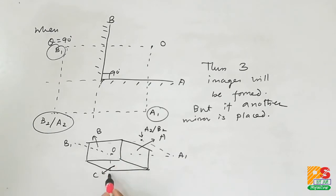Now what happens when mirror C is placed? One image is formed directly behind C from the object. For A1, another image is formed. For B1, another image is formed, and for A2, another image is formed.